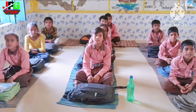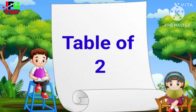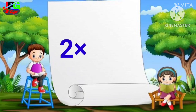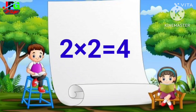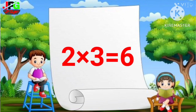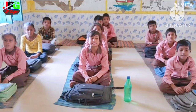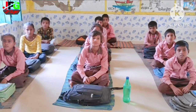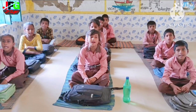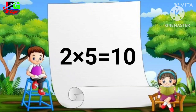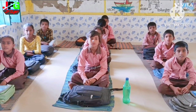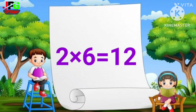2 1s are 2, 2 2s are 4, 2 3s are 6, 2 4s are 8, 2 5s are 10, 2 6s are 12.